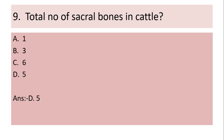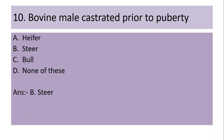Ninth question: Total number of sacral bones in cattle — (a) 1, (b) 3, (c) 6, (d) 5. Answer is (d) 5.